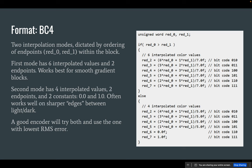There are two ways to interpolate between endpoints in BC4. The first has six interpolated values forming a total of eight, indexed by the three-bit pixel values. The second mode uses four interpolated values but also has the constants 0 and 1. This can work well in images where you don't have a smooth gradient but more of a soft edge between light and dark — it allows a narrower range for interpolation while still being able to represent black and white. The two modes are indicated by the ordering of the endpoints: if endpoint 0 is greater than endpoint 1 the decoder assumes the first mode, otherwise the second. A good encoder will try both modes for each block and use the one with the least error.